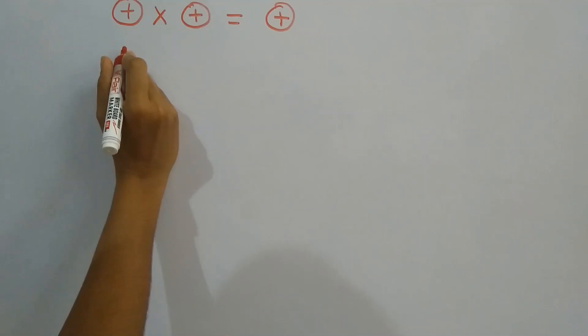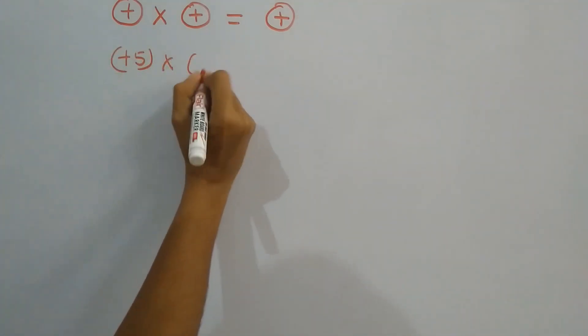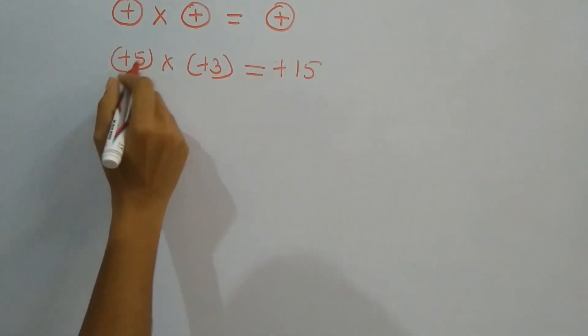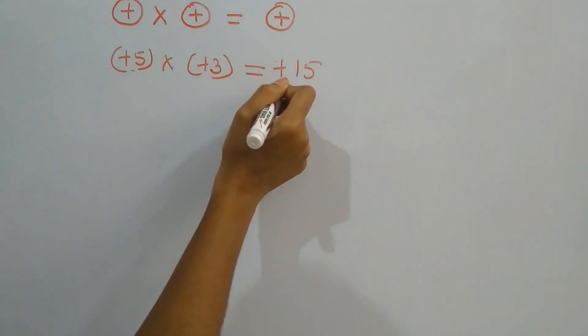Example: This one is plus 5 and the second number is plus 3. The answer will be plus 15. That is, plus and plus is always a positive number.